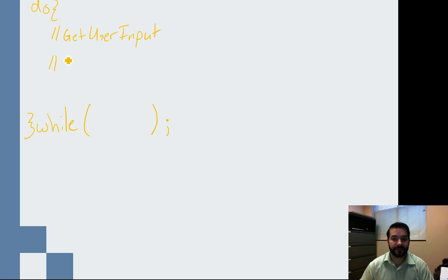Get the user input first. Then determine too low, too high. While guess does not equal my number.